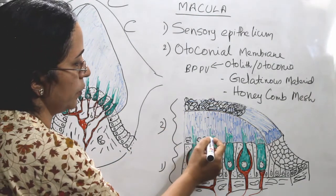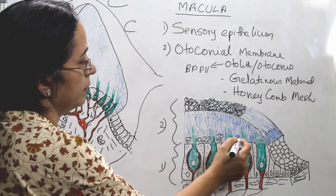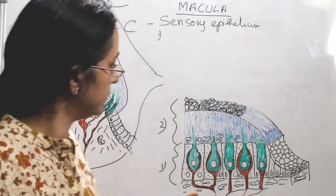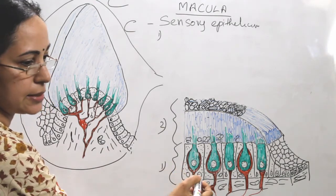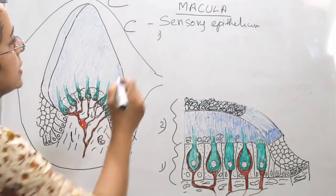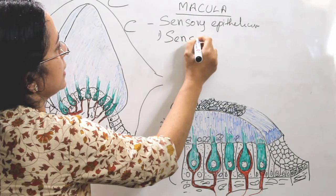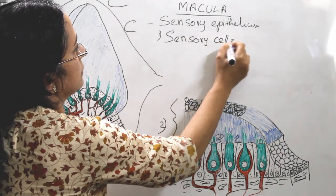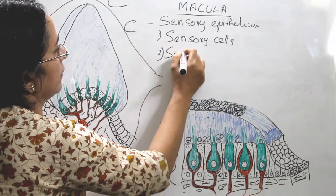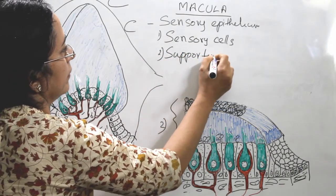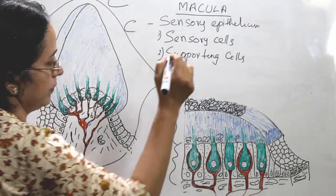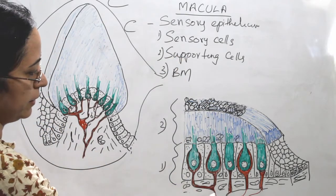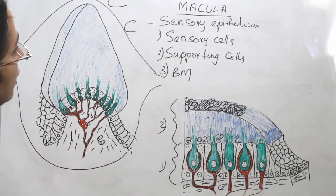The sensory epithelium has a basement membrane, supporting cells, and sensory cells. The sensory cells are the most important. Nerve fibers pass through the basement membrane. The sensory cells are divided into type 1 and type 2.